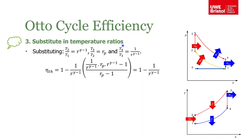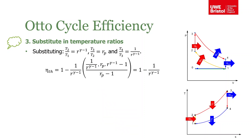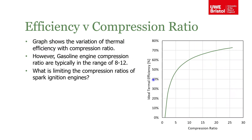Substituting the temperature ratios into the thermal efficiency equation gives a somewhat complex expression, but we can cancel terms. R^(gamma-1) cancels with its inverse, and the (R_p - 1)/(R_p - 1) pressure ratio terms cancel entirely. What we're left with is: thermal efficiency = 1 - 1/r^(gamma-1). So the thermal efficiency of the Otto cycle is simply 1 minus 1 over the compression ratio to the power of gamma minus 1.